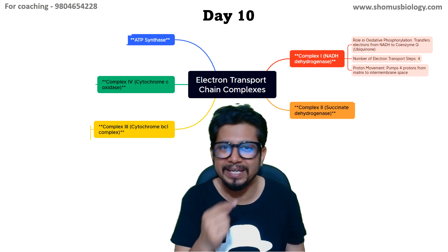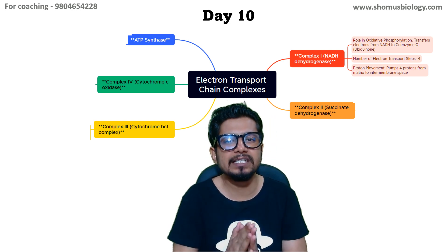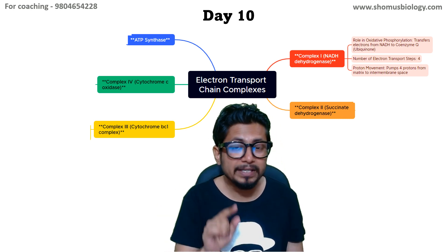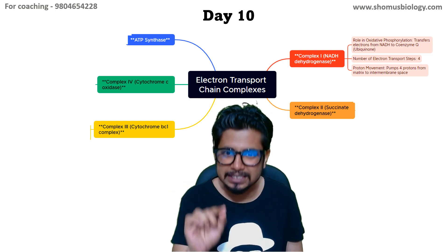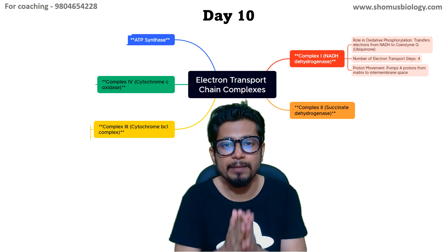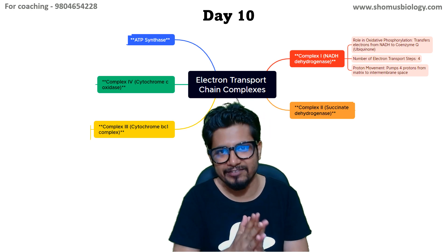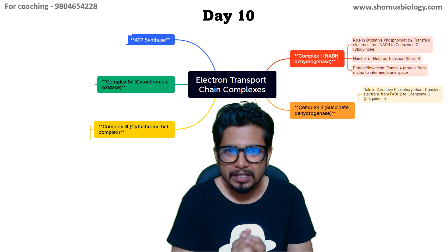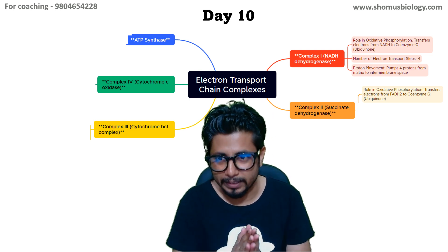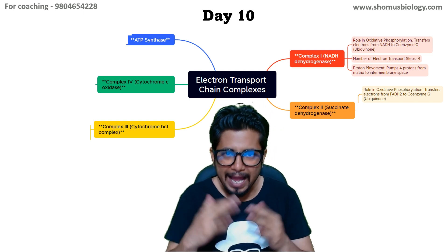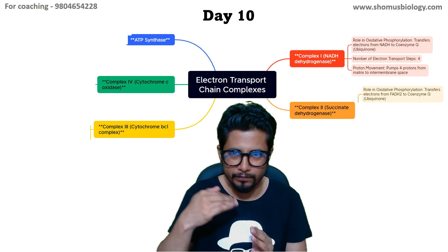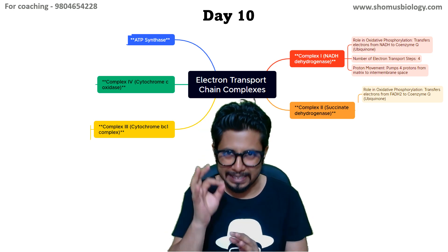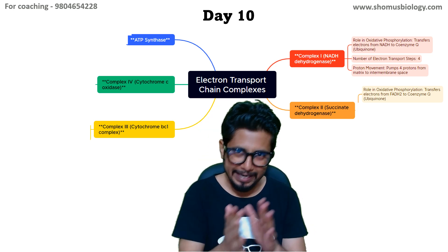Complex II is where FADH2 begins its journey. If NADH starts the journey in Complex I, FADH2 starts the journey in Complex II. Complex II is the enzyme succinate dehydrogenase, which is also an enzyme of the TCA cycle, or citric acid cycle. FADH2 donates its electrons in Complex II to coenzyme Q or ubiquinone. Because FADH2 starts its journey at Complex II, it always produces less ATP compared to NADH.